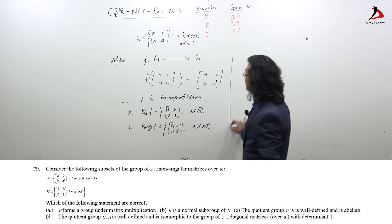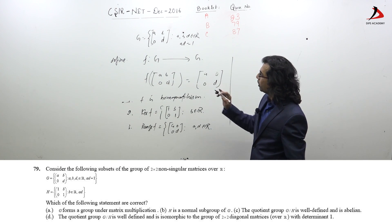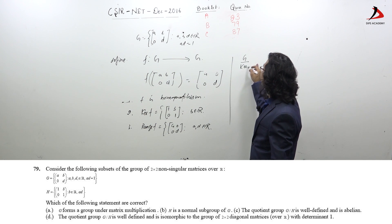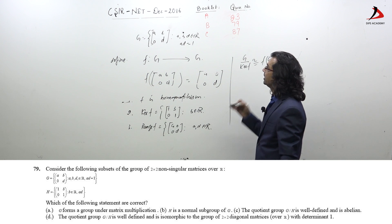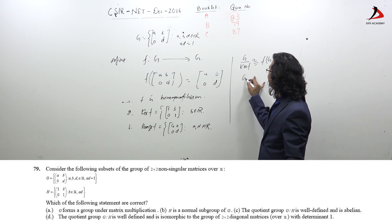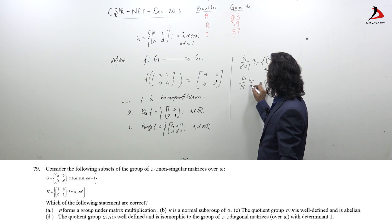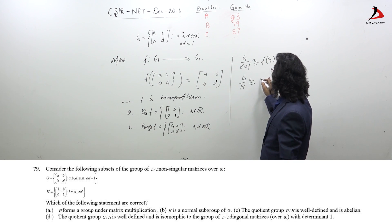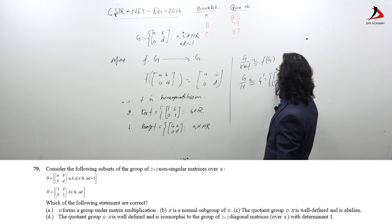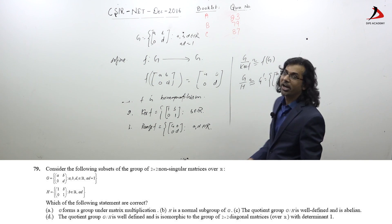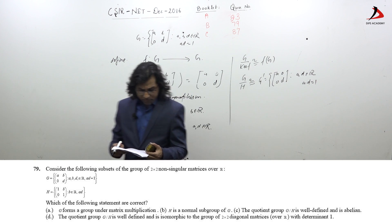I am using fundamental theorem on homomorphism, which says G/kernel F is isomorphic to F(G). So here, G/H is isomorphic to G', which is the collection of diagonal matrices where A and D belong to R and AD belongs to R.